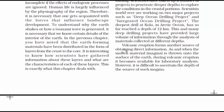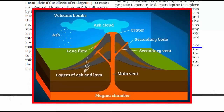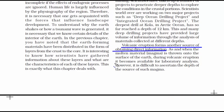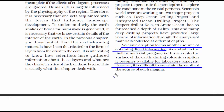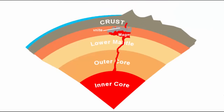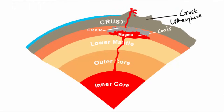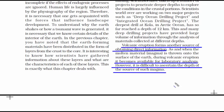Another way is to analyze the material that comes out automatically from the interior — volcanic activities. Volcanic eruption forms another source of obtaining direct information. Whenever there is a volcanic eruption, a sample of the magma is tested around the globe by scientists to determine its components. However, it is difficult to assume the depth of the source of such magma — whether it is from the core or somewhere in between the earth's layers. So there are some limitations when the quest of knowledge is dependent on direct sources.